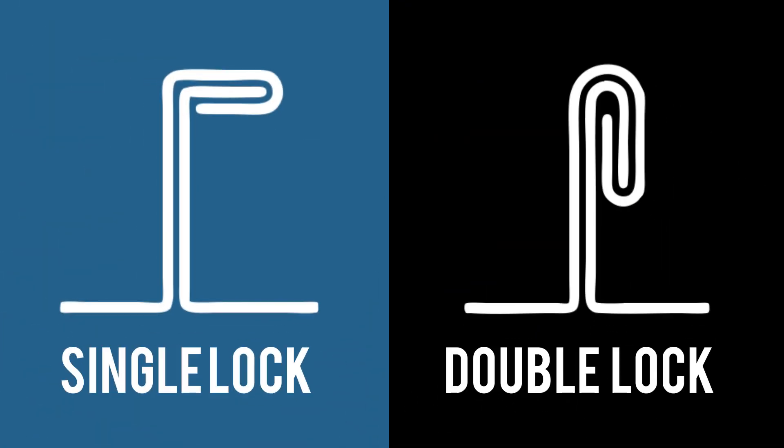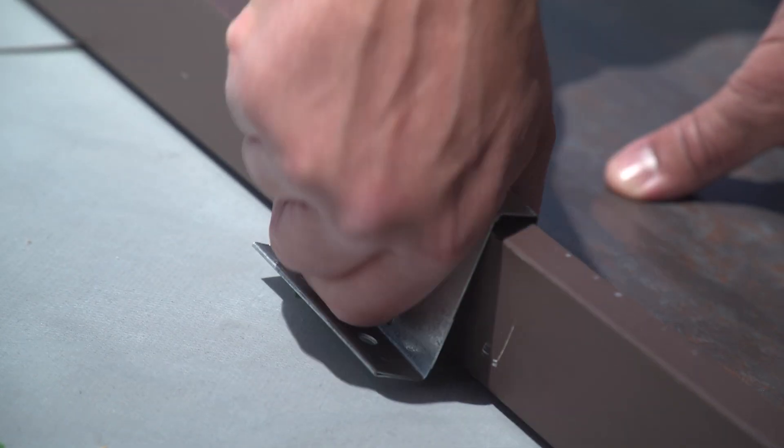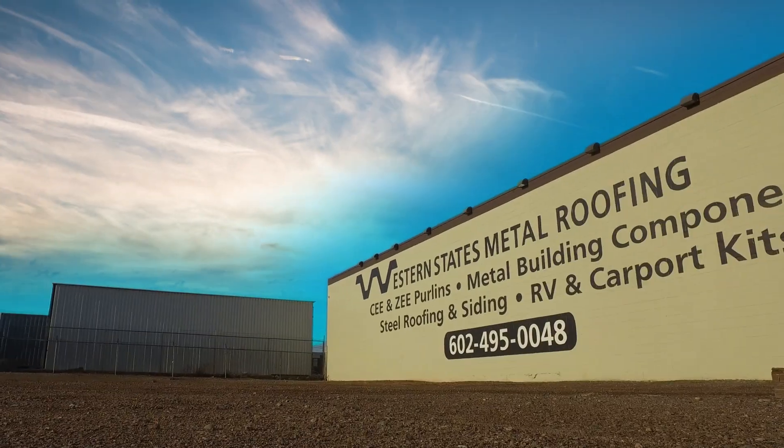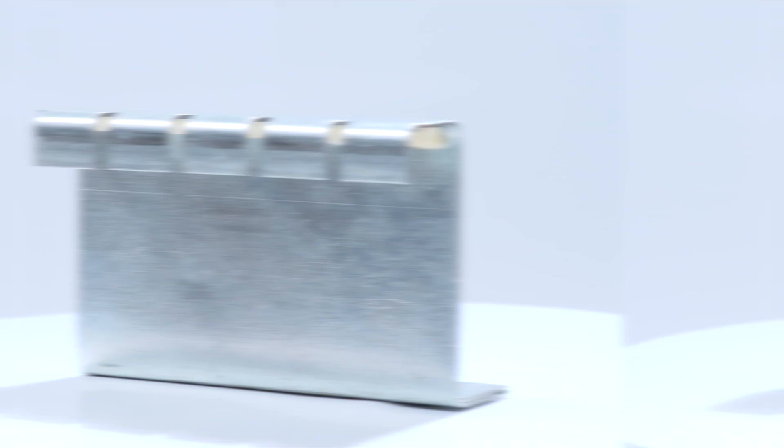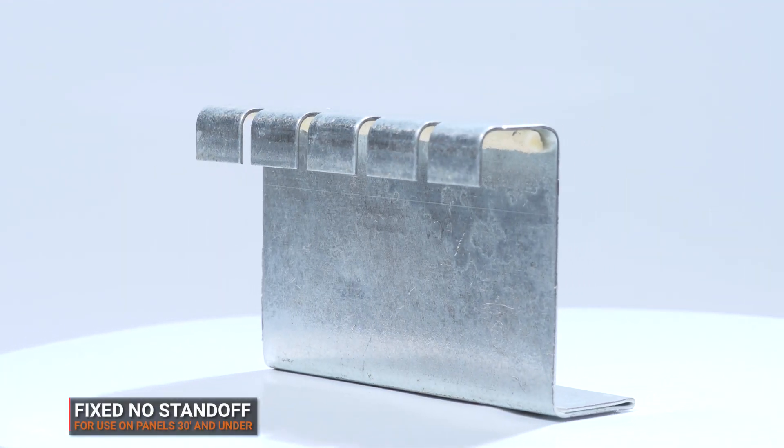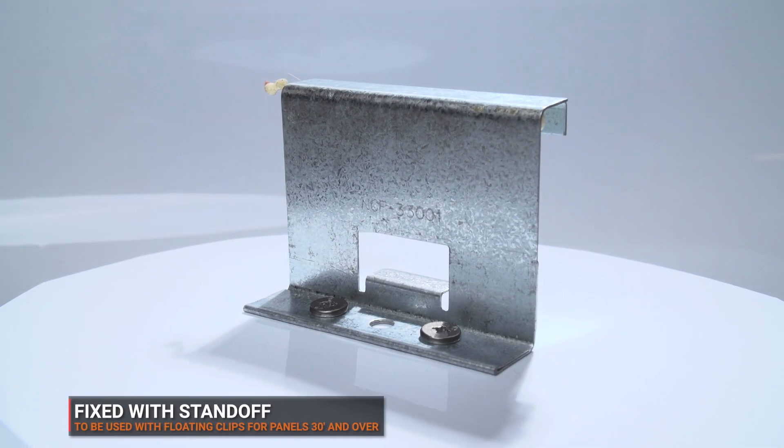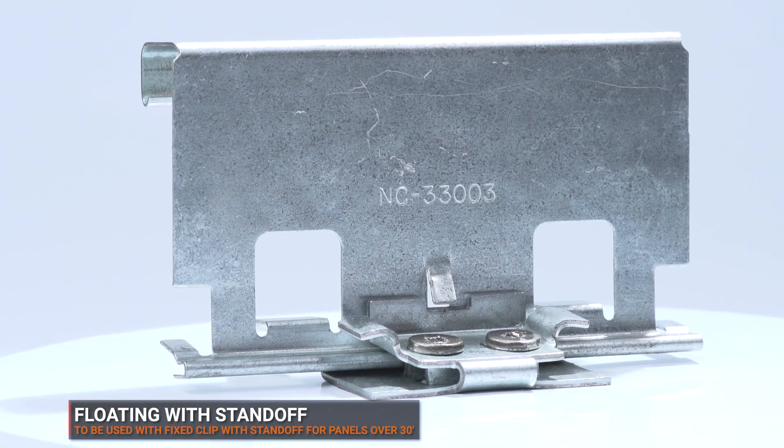Whether you are installing a single lock or double lock mechanically seamed panel, you will need to install fastening clips. Western States Metal Roofing offers three types of clips: fixed clip with no standoff, fixed clip with standoff, and floating clip with standoff.